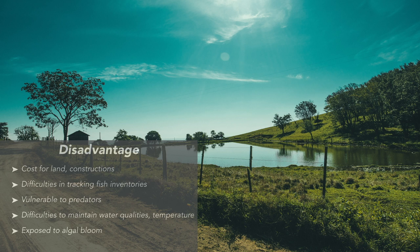As the fish are all over the pond, it will be harder to keep track of fish inventories including their health, size and numbers. The organisms you culture are also vulnerable to predators such as birds, monitor lizards and even snakes. Water quality parameters and temperature will be hard to control, and ponds are also exposed to algal blooms if the water is not well aerated. When dissolved oxygen concentration becomes too low, it will consequently risk the organisms inside the pond.